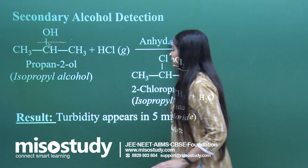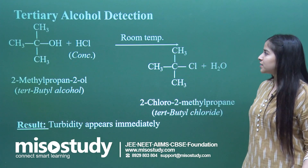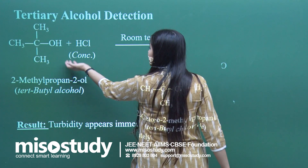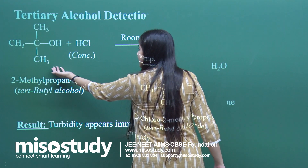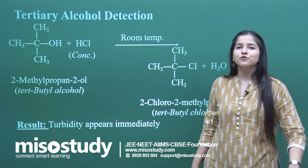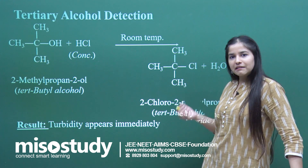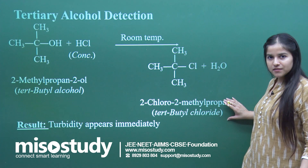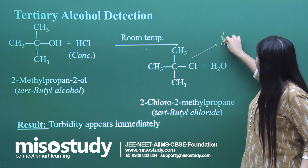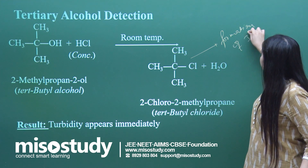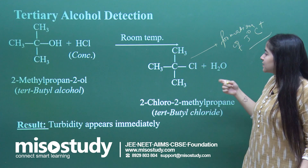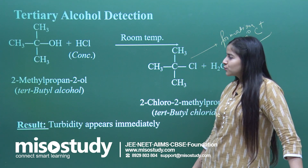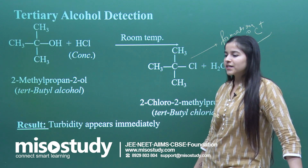Moving on to tertiary alcohol — the reaction gave turbidity very, very quickly, in a matter of seconds, in fact microseconds. I got turbidity from a tertiary alcohol even at room temperature — I did not heat it at all. I just added the reagents and got turbidity immediately. This is because of the formation of the tertiary carbocation, which was the main reason behind the immediate turbidity appearance.